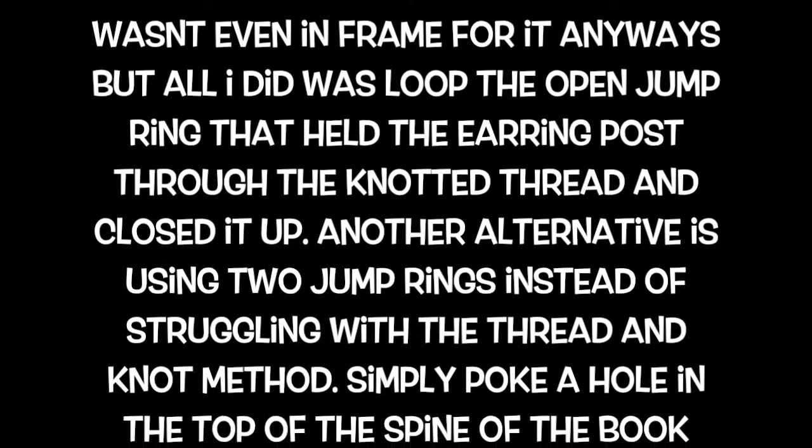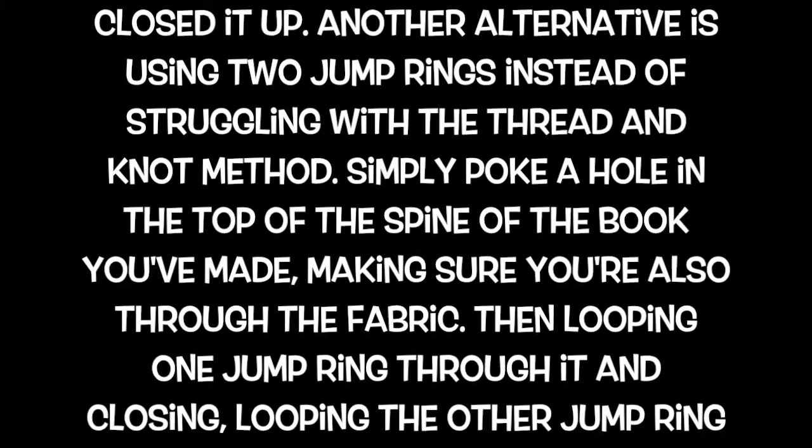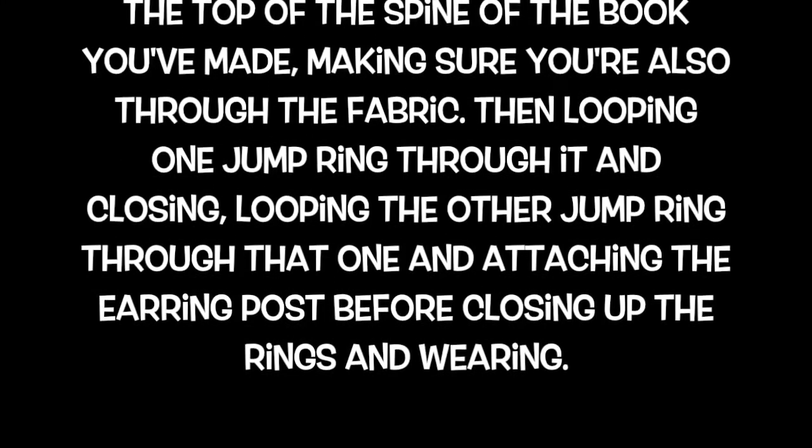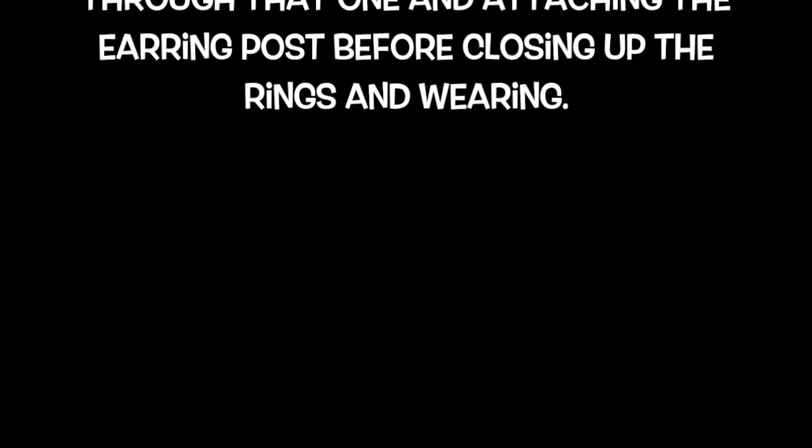Another alternative is using two jump rings instead of struggling with that thread and knot method. Simply poke a hole in the top of the spine of the book you've made making sure that you're also going through the fabric as well as the cardboard. Then you loop one jump ring through that hole and close it up. Loop the other jump ring through that one but make sure that the earring post is attached before closing up the jump rings and wearing them.